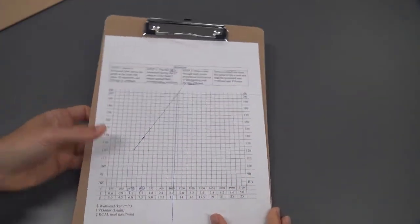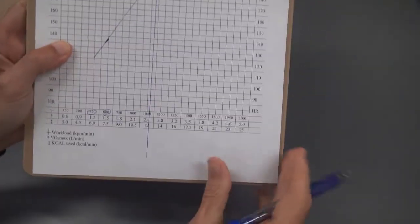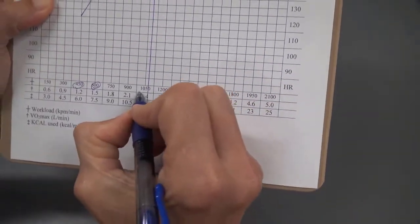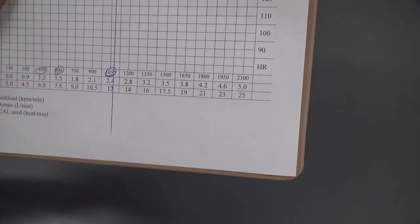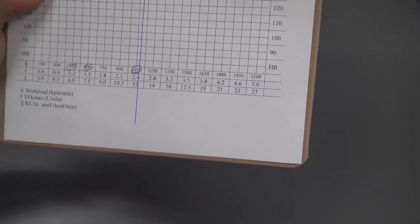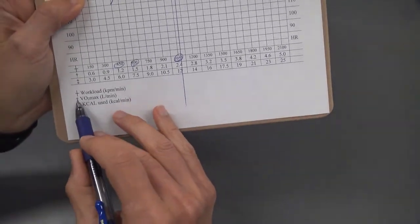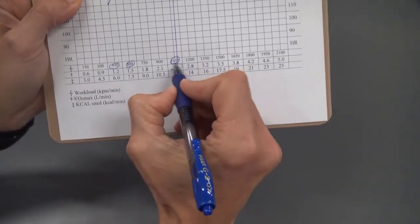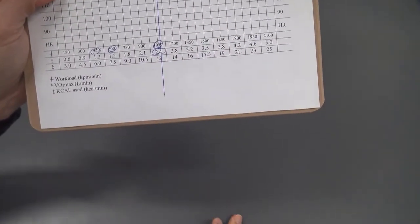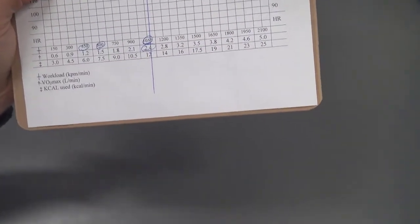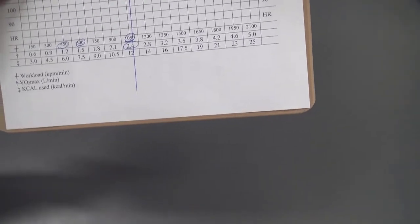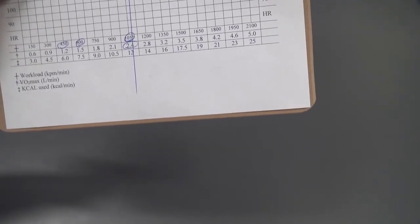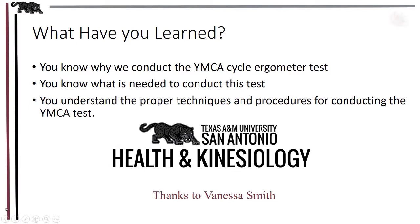This vertical line now tells us where estimated maximal values are, and as you can see, our client has an estimated maximal workload of 1,050 kilogram meters per minute. Her estimated VO2 max in absolute terms is 2.4 liters per minute. Further lab work and class lectures go over in greater detail how to interpret and convert these values to be used in assessing fitness and generating exercise prescriptions for your clients.